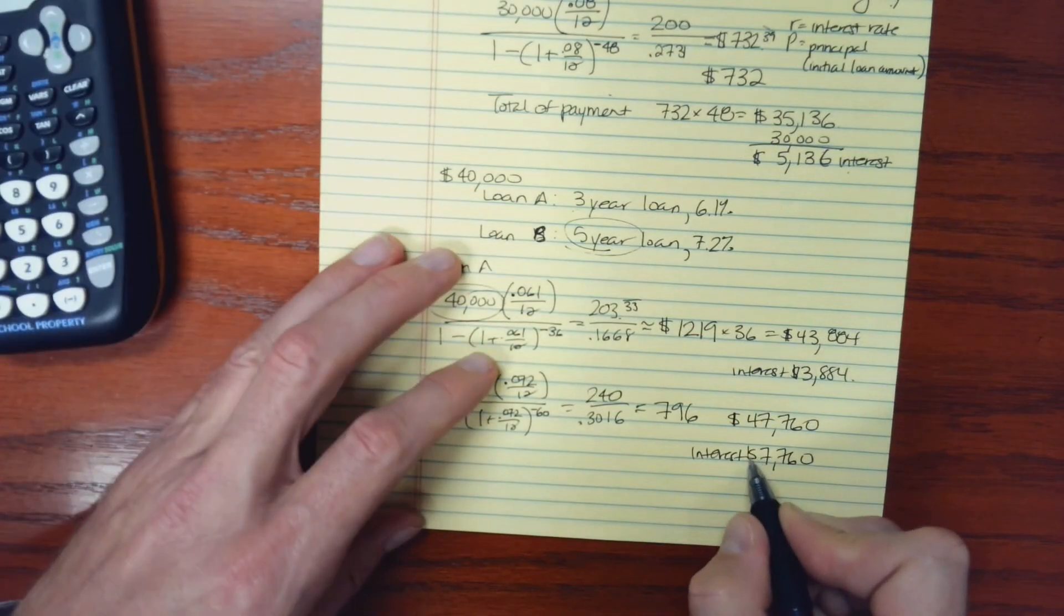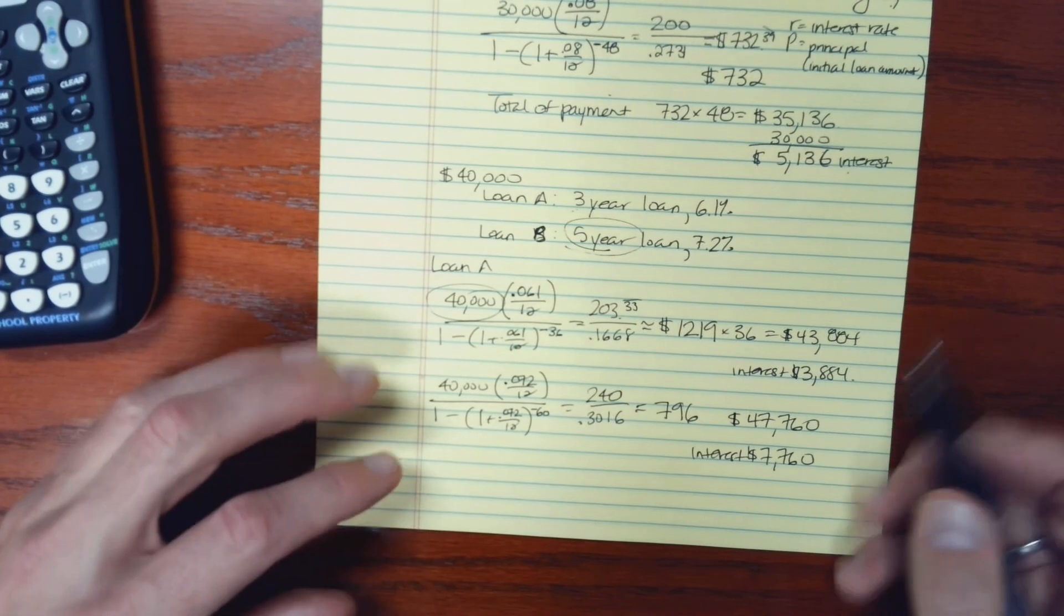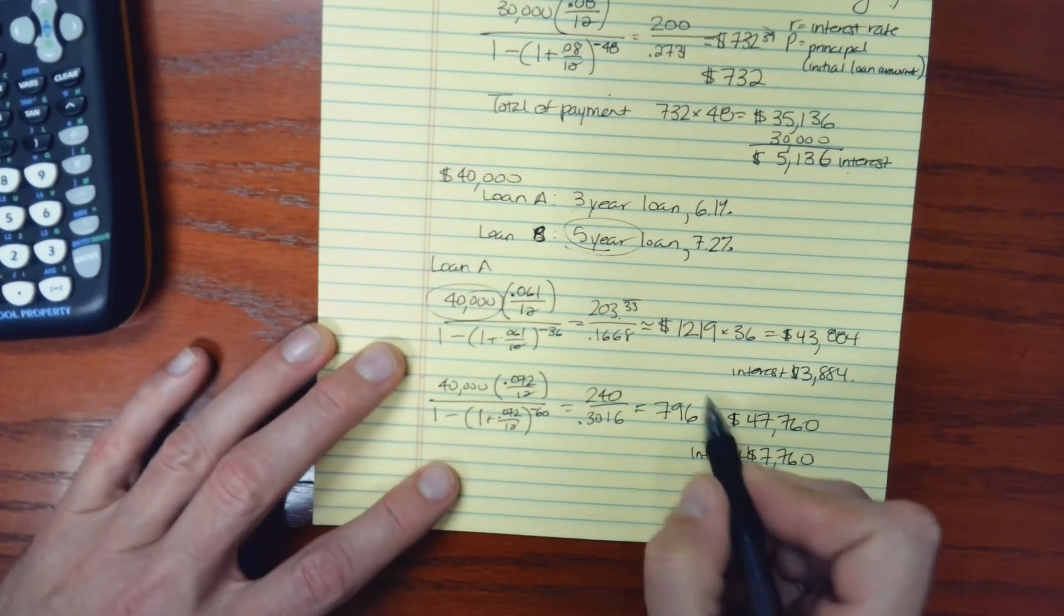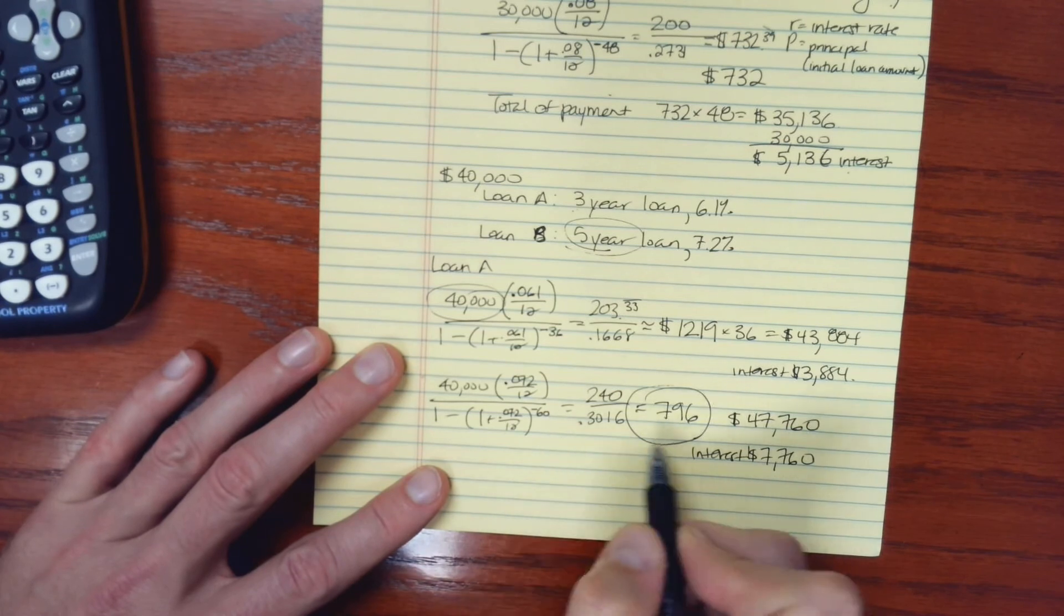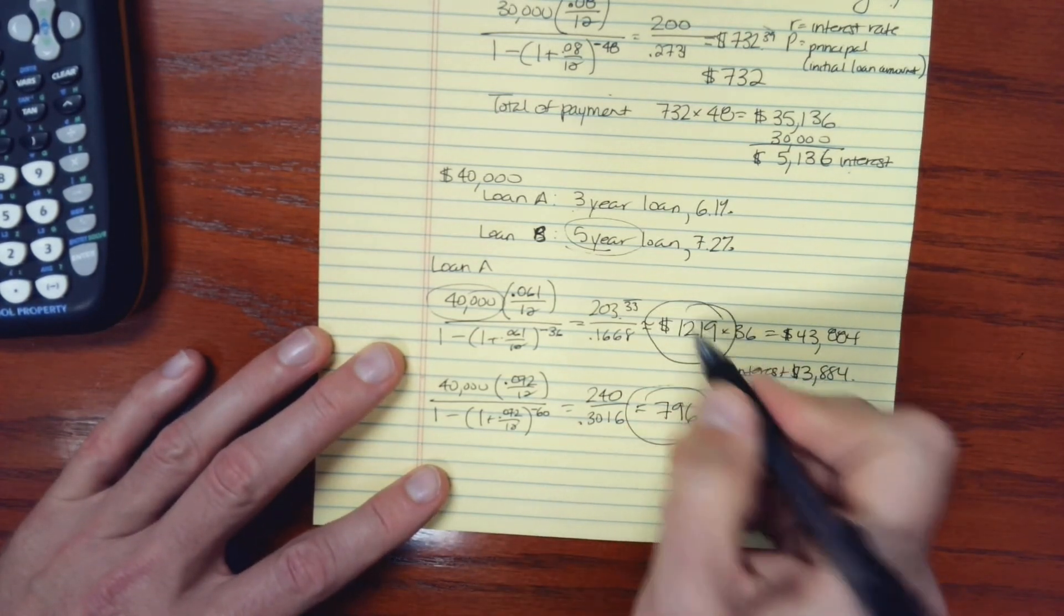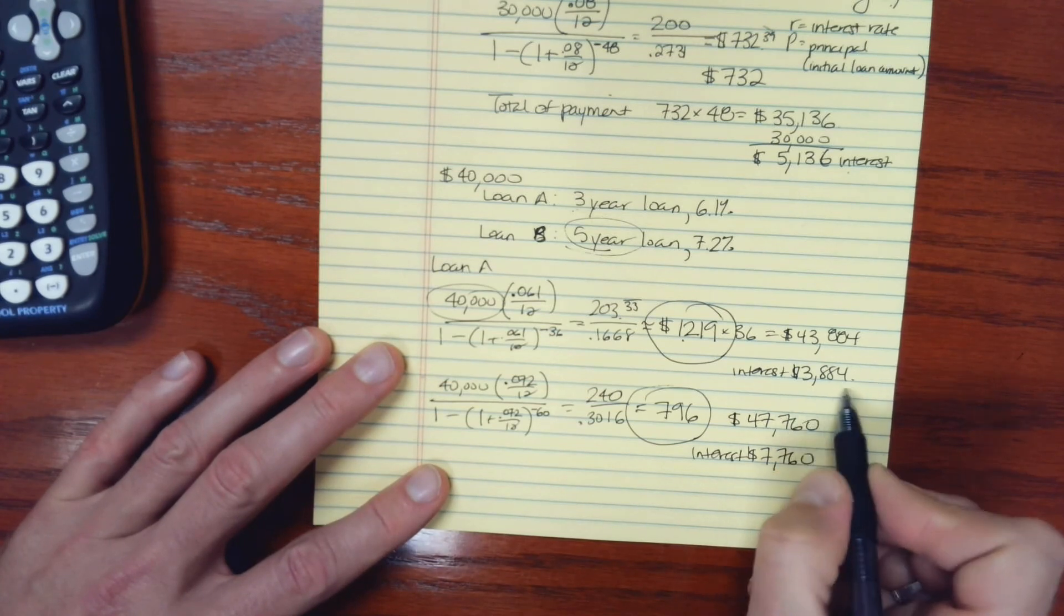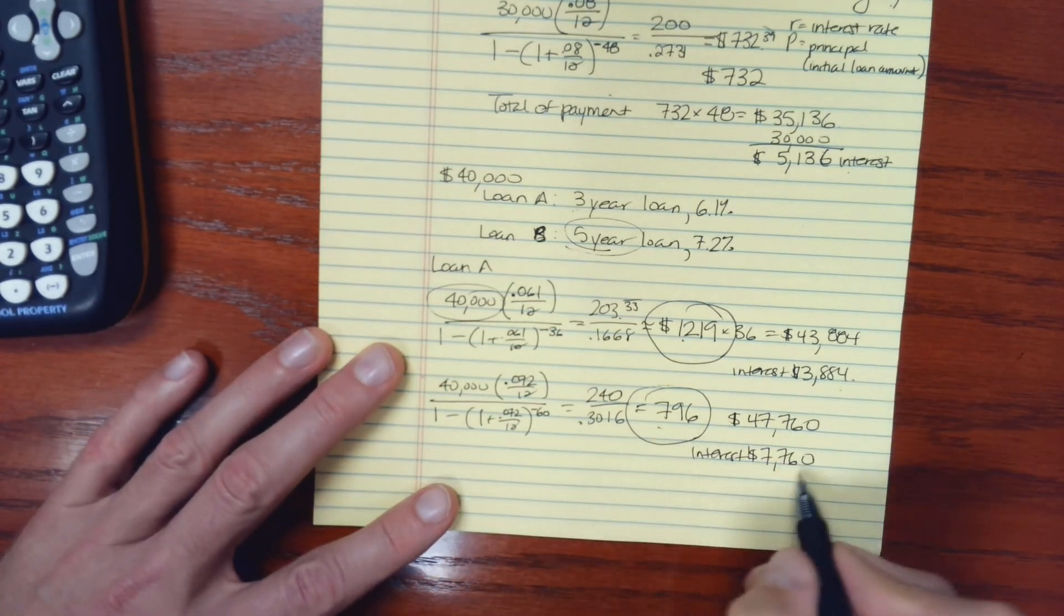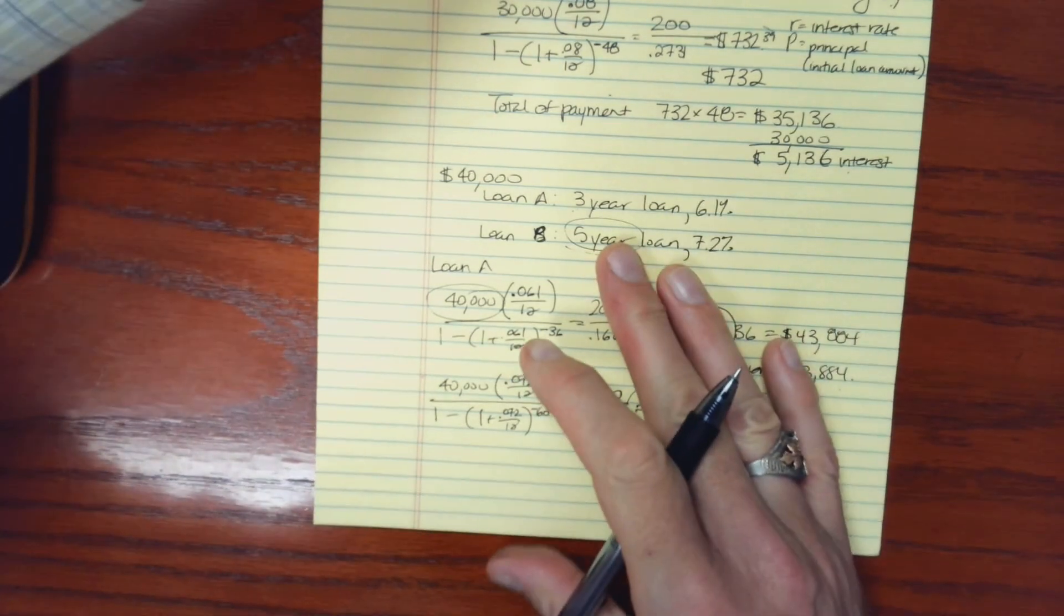So about almost twice as much interest with loan B. Now my payments are less, but I'm making more of them. In fact, two years more, so 24 months. So I take a higher payment, but the end result is less interest. Or a lower payment, but I end up paying a lot more interest. So that's a way to compare two different loans.